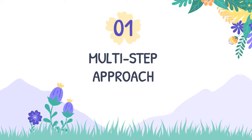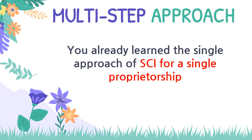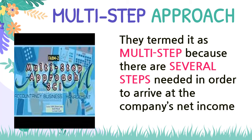First, we will discuss the multi-step approach. You already learned the single approach of a statement of comprehensive income for a single proprietorship. They term it as multi-step because there are several steps needed in order to arrive at the company's net income. Unlike in the single approach, it is simple — just deduct and add. But here, we have to follow multiple steps.